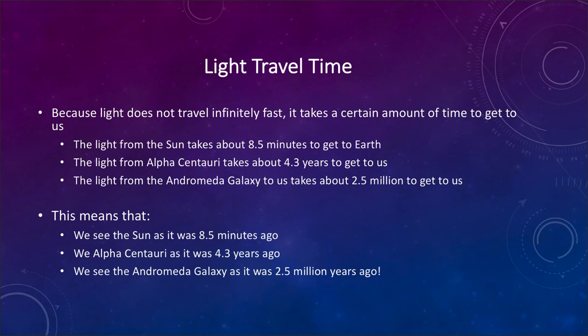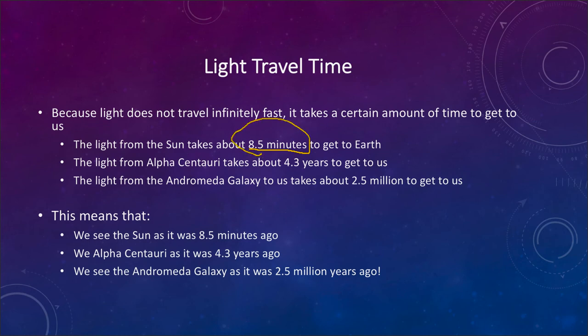The last topic is light travel time. Light has a certain speed limit — it does not travel instantaneously, so it takes time to reach us. Light from the sun takes about eight and a half minutes to get here, meaning we see the sun not as it is right now, but as it was eight and a half minutes ago. If the sun had just vanished seven minutes ago, it would still take another minute and a half before we would even know about it. If we look at the nearest star, Alpha Centauri, the light takes about four years to reach us, so we see it as it was a little over four years ago.